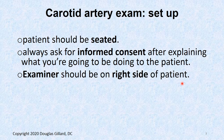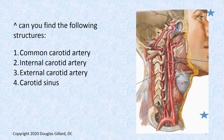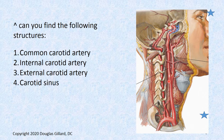Palpation and auscultation of the carotid arteries is up first. To examine the carotid arteries, the patient should be seated. Make sure you get informed consent. The examiner should be on the right side of the patient. You are palpating the common carotid artery. Notice the carotid sinus is just above the laryngeal prominence — we've seen quite a few cadaver specimens and sometimes it varies.